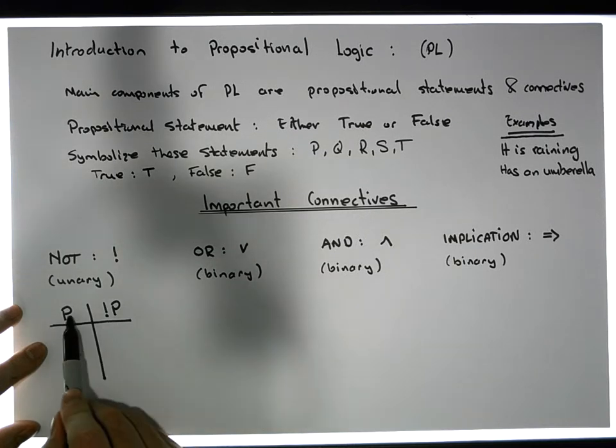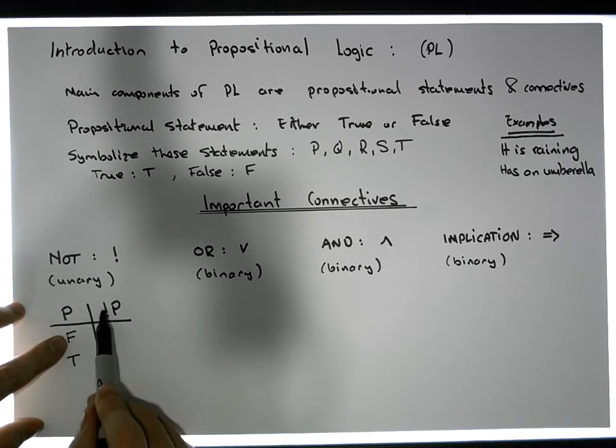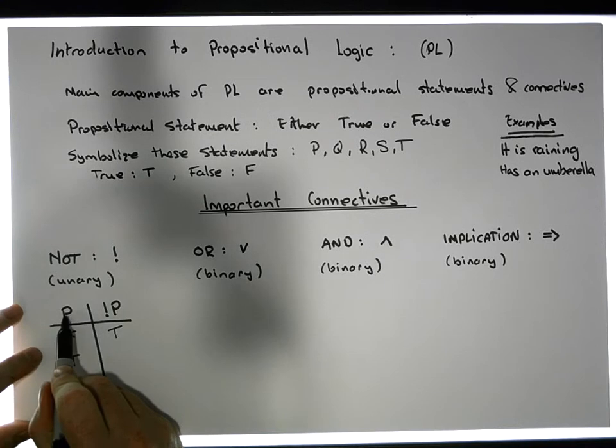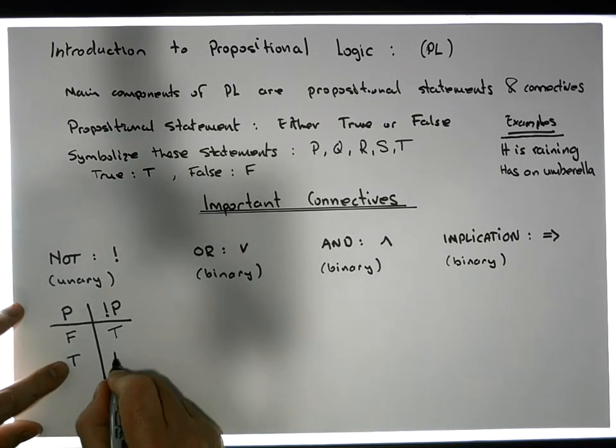For example, if the original proposition P is actually false, well then NOT P must be true. If the original proposition is true, well then NOT P must be false.